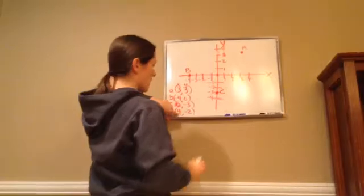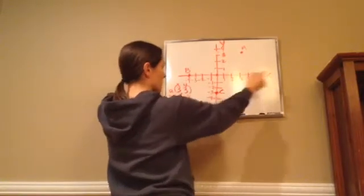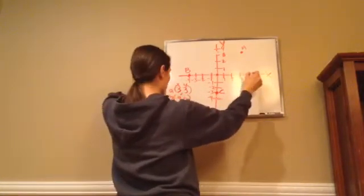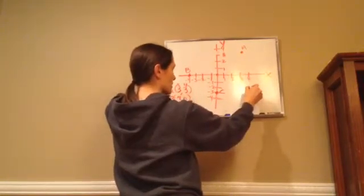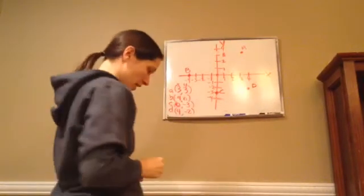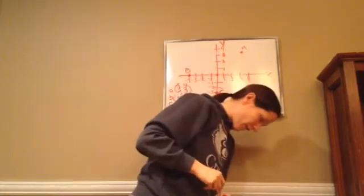And then D is 4, negative 2. So 4 is on my X. So 1, 2, 3, 4. And then D is negative 2, 1, 2. And this is a D. All right, and that's how you would graph those.